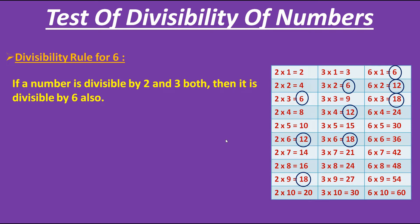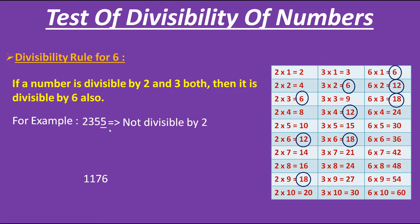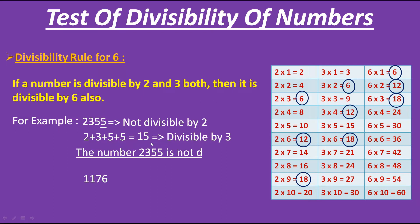Let's take examples. Here I am taking two numbers. First, we have to check whether the number is divisible by 2 — for that we check its unit place. Here we have 5 on its unit place, so this is an odd number and therefore it is not divisible by 2. For 3, we add the digits: 2 + 3 + 5 + 5 gives us 15, which is a multiple of 3. Therefore this number is divisible by 3. But as this number is not divisible by 2, the number 2355 is not divisible by 6.